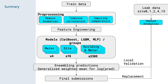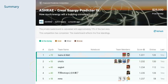This figure shows a high-level overview of our solution. We started by pre-processing and cleaning our data. Next, we created features and trained our models. We used CATBoost, LightGBM, and multilayer perceptrons. We trained our models on different groupings of the data, and then we got our final model by ensembling our predictions using the generalized weighted mean. Our final solution got us first place on the private leaderboard.